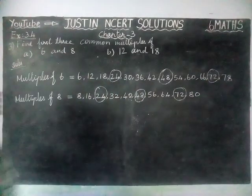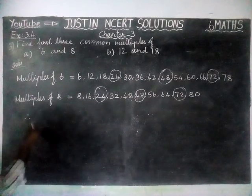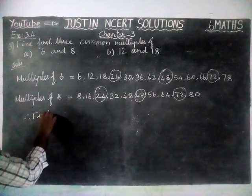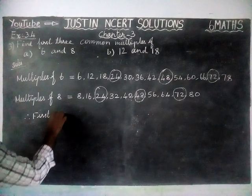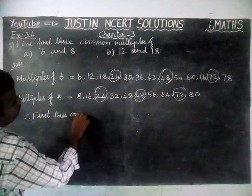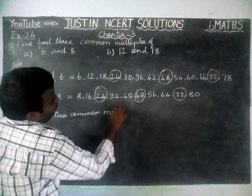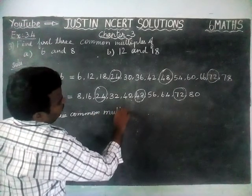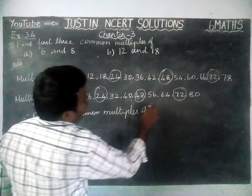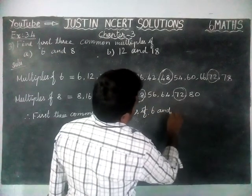Therefore, the first three common multiples of 6 and 8 are 24, 48, and 72.